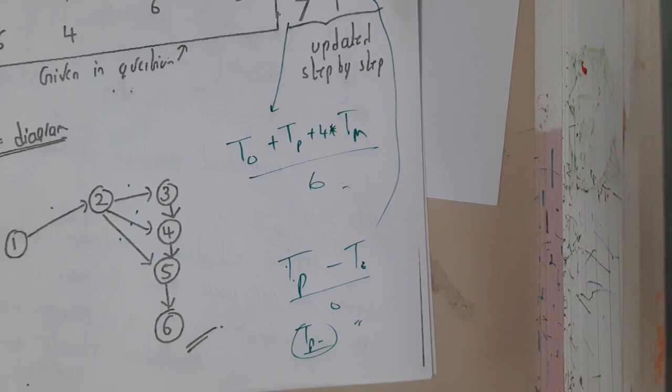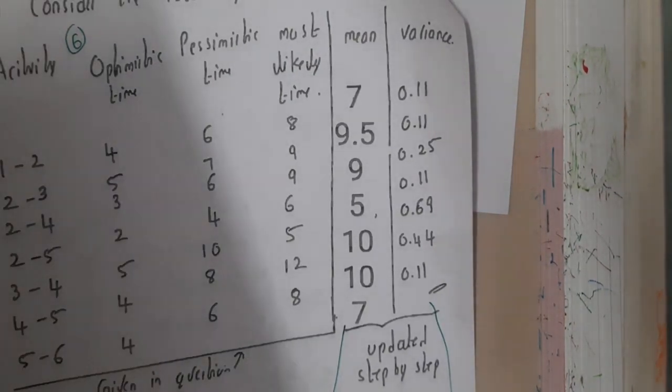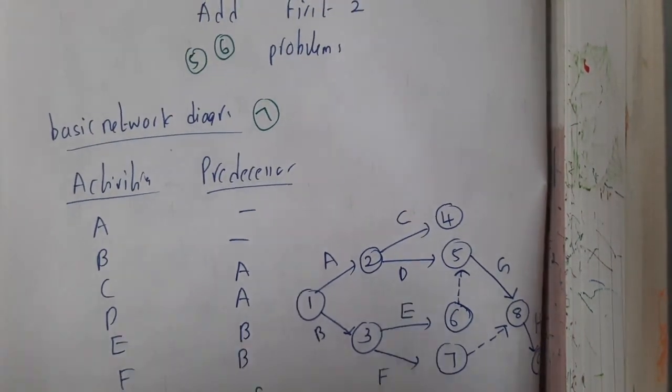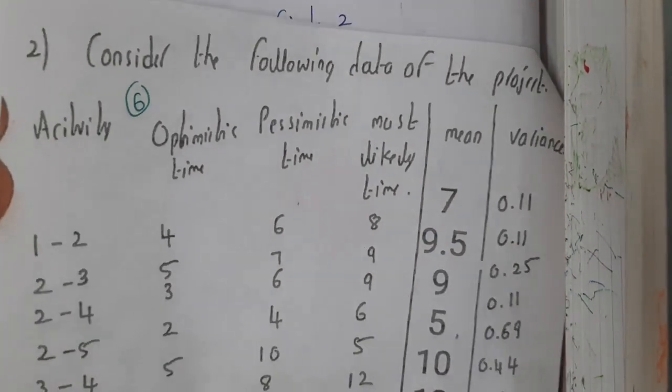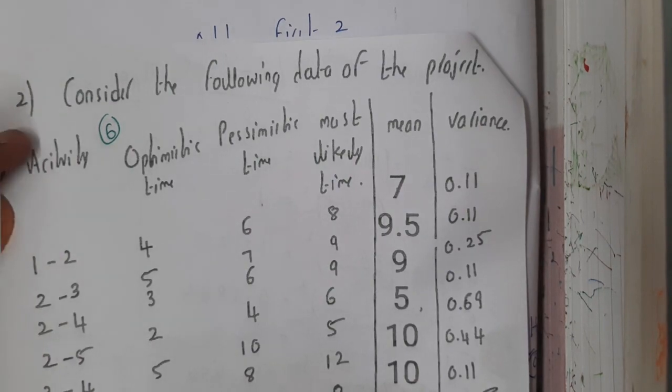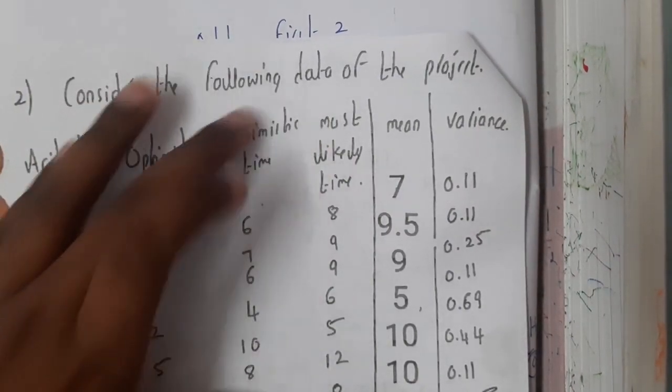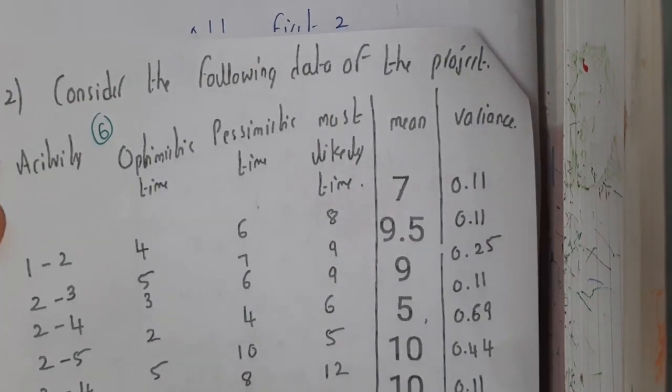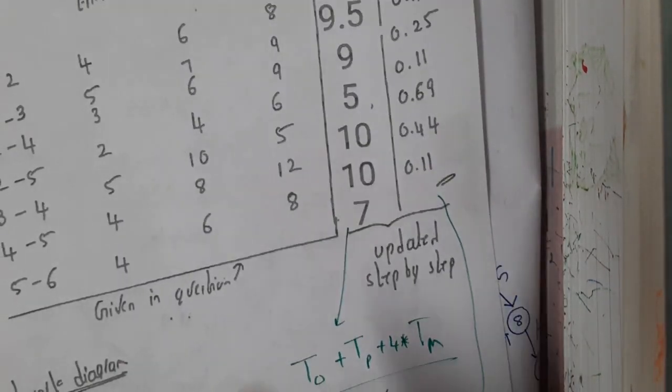In the next lecture, we will be starting with one more type of problem in which he will not give you the table. There are no basic method names here, so that is the reason why I am just saying you with respect to questions. If he is giving the optimistic time, pessimistic time, and all those things and asking critical path, you will be solving with this method, the variance mean method.